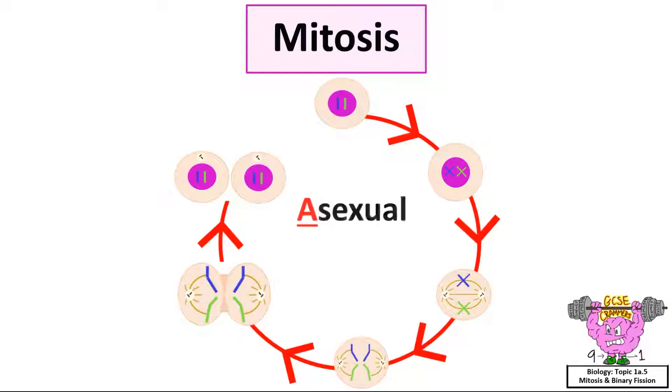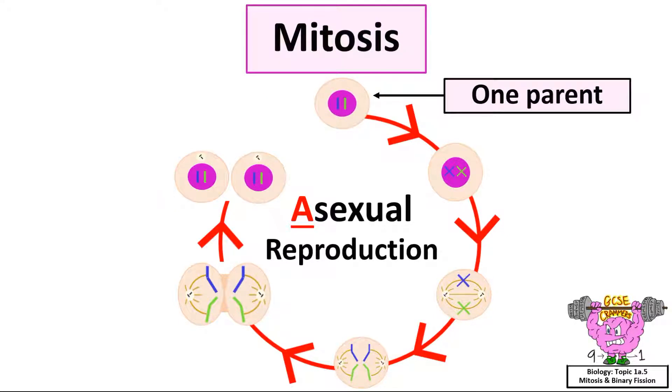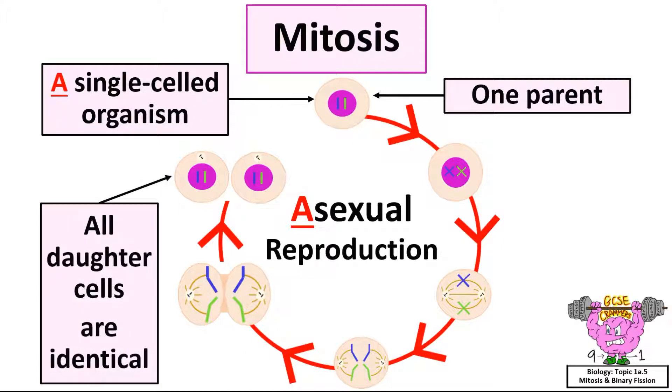Mitosis is asexual reproduction. Asexual reproduction means only one parent is needed for reproduction. A single celled organism and all daughter cells are identical. The way to remember it is the A in asexual stands for A single cell is needed for reproduction.